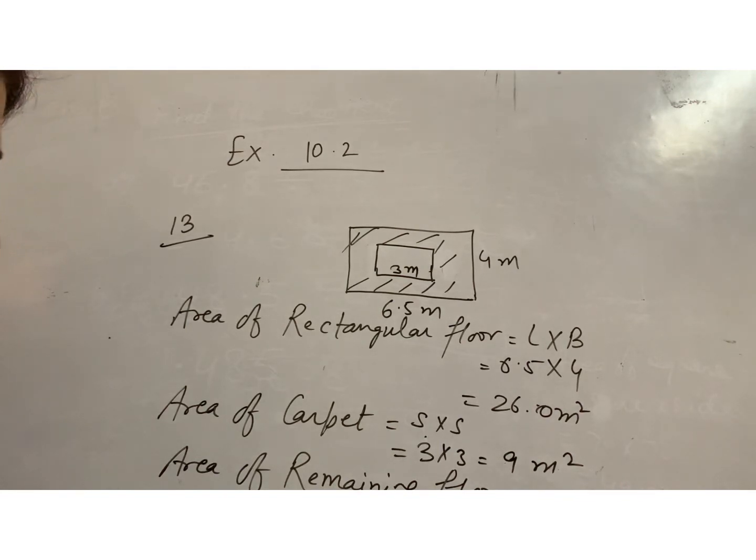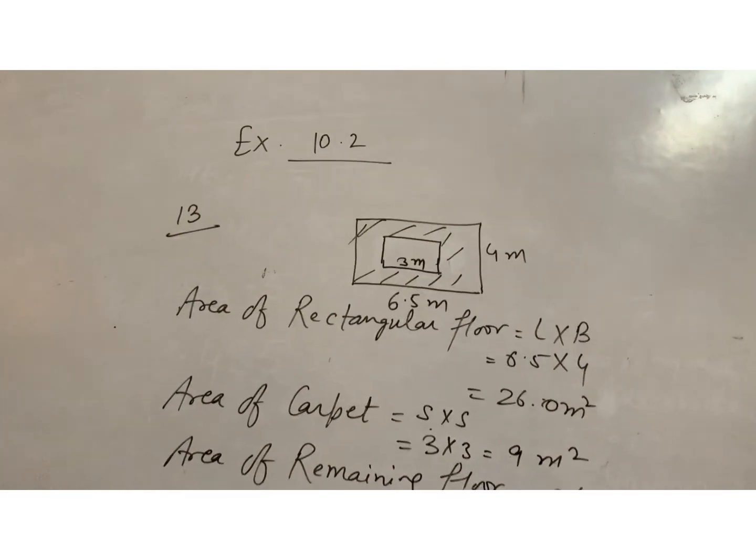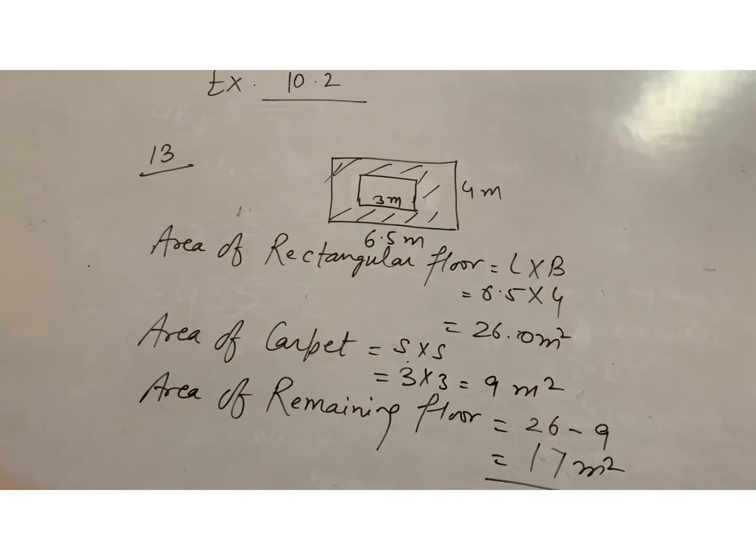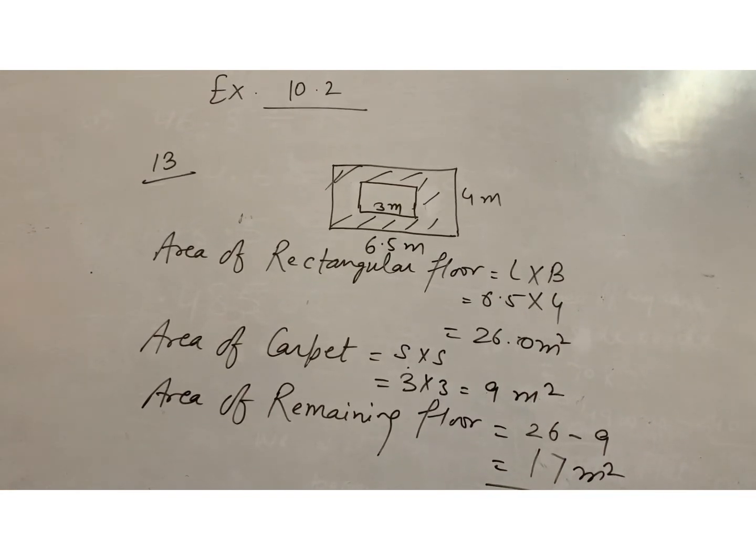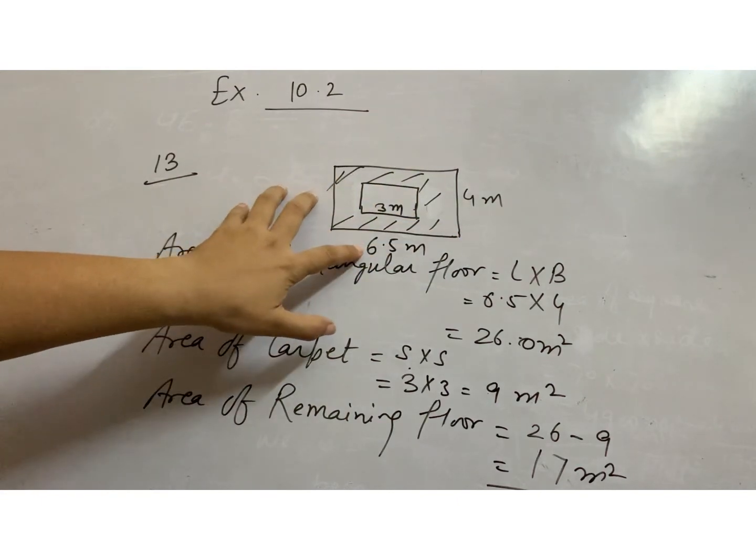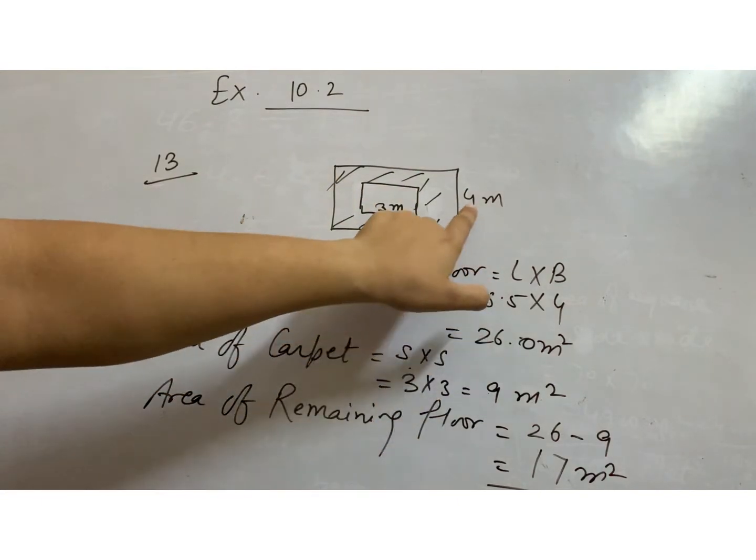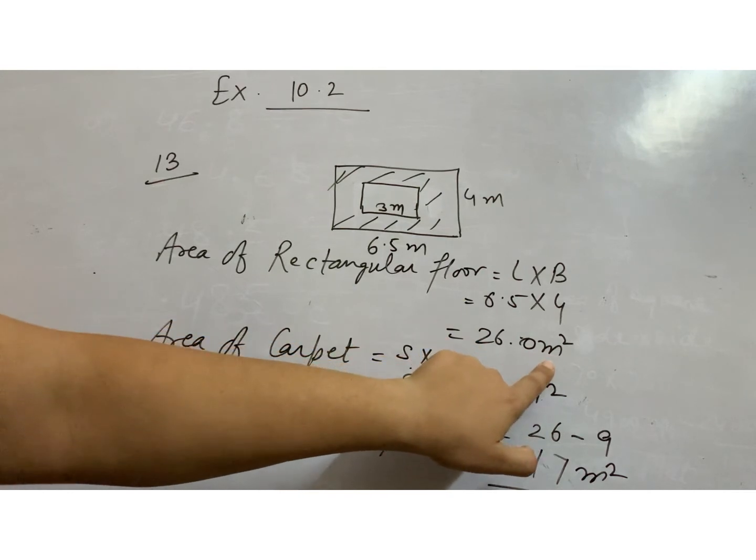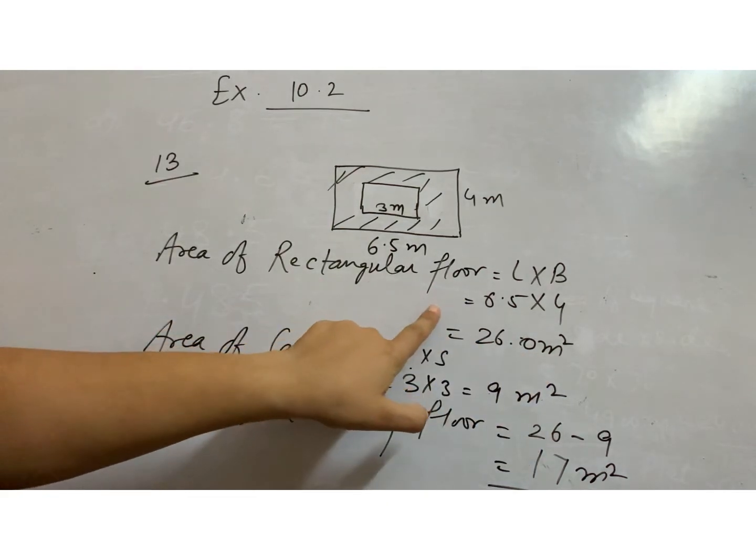I am explaining again, so listen to me carefully. Here we have a rectangular floor which side length is 6.5 and breadth is 4. Then 26 meter square is the area of rectangular floor.